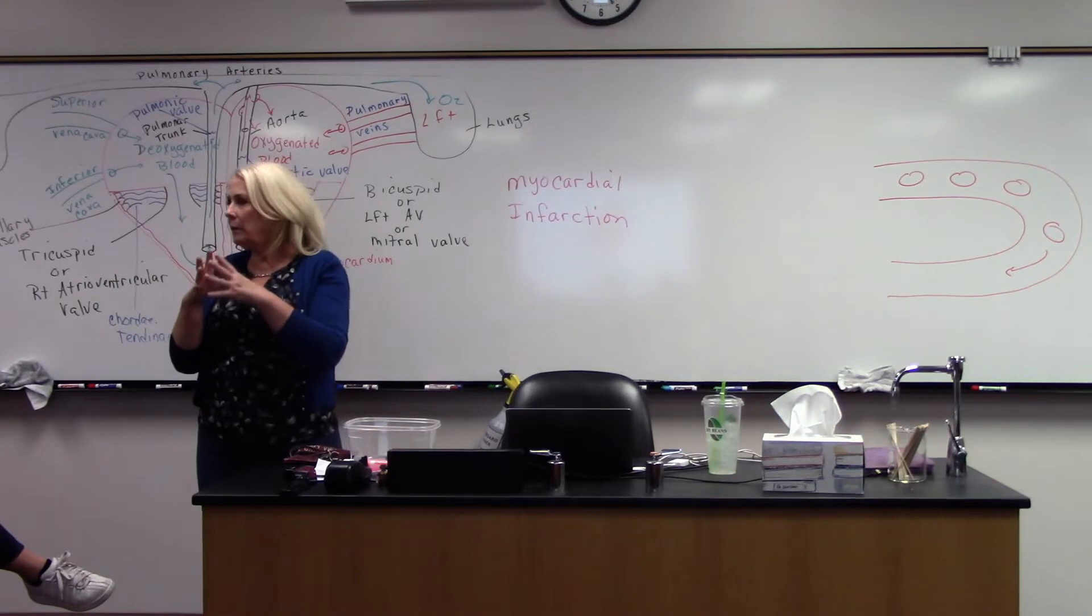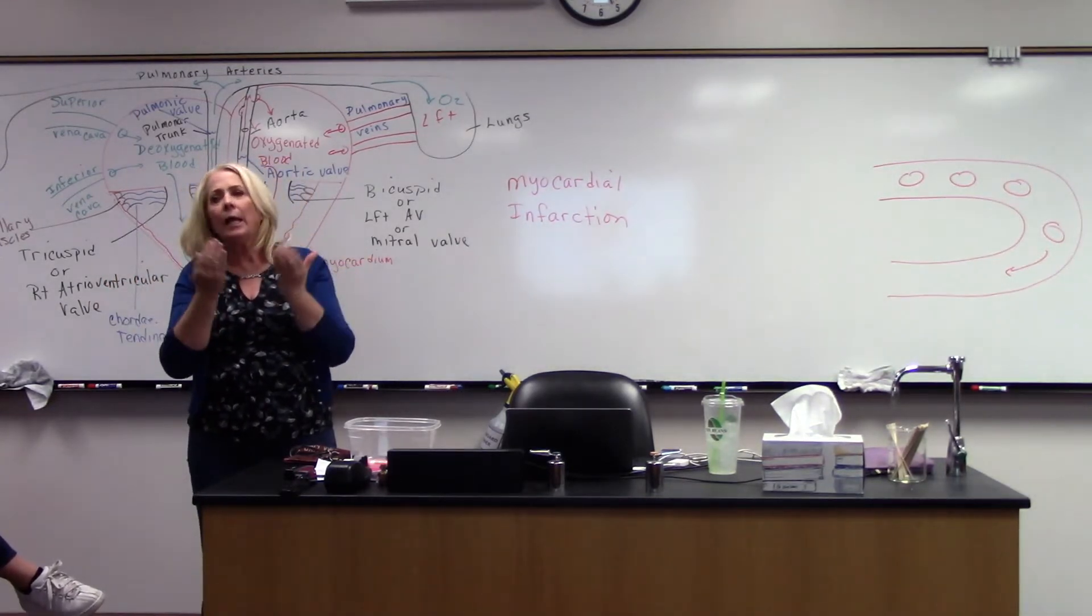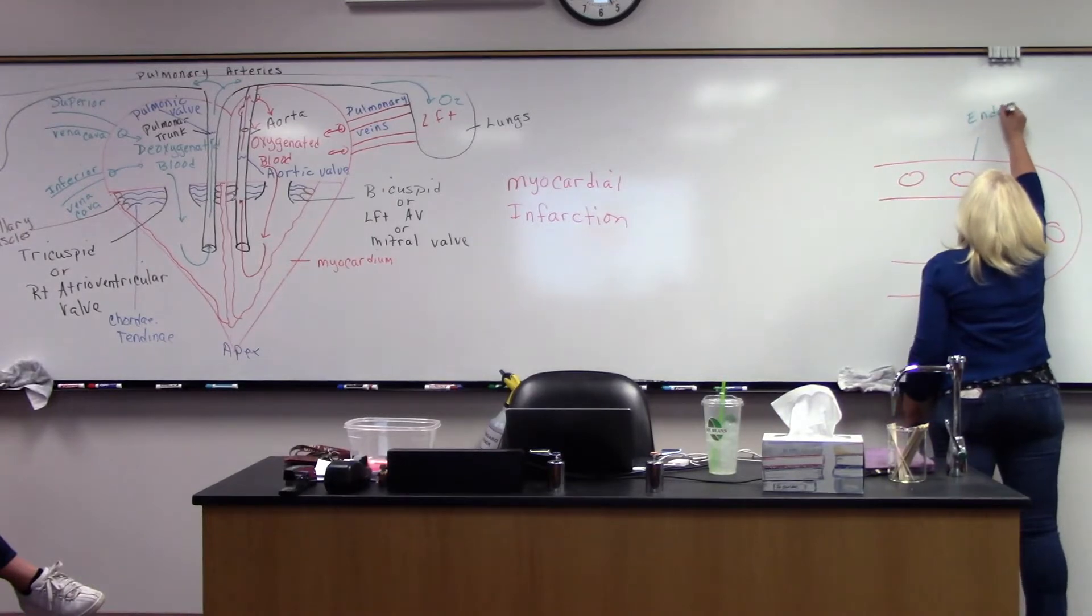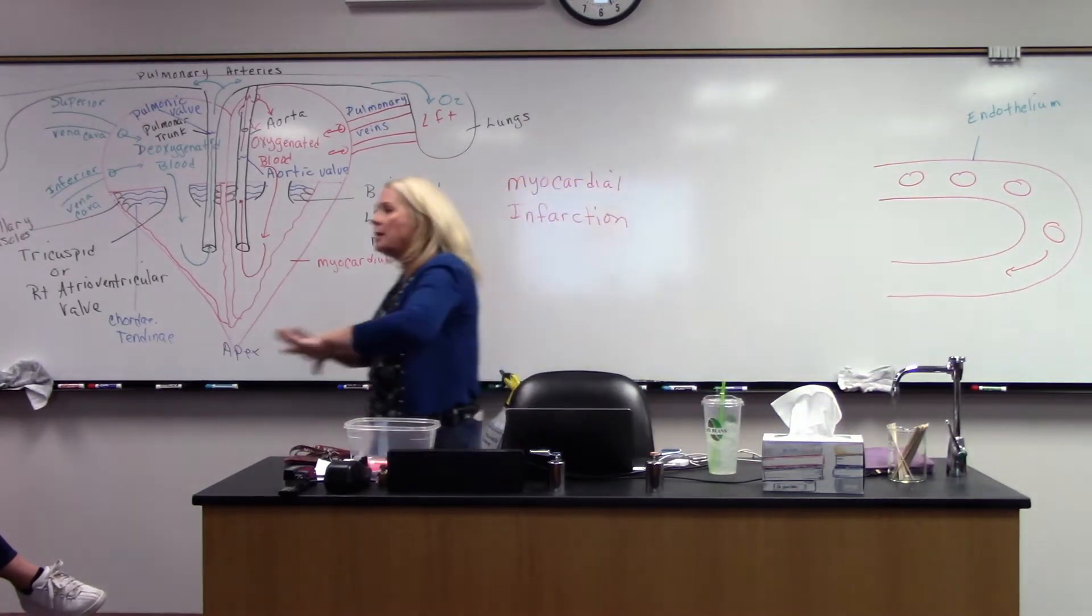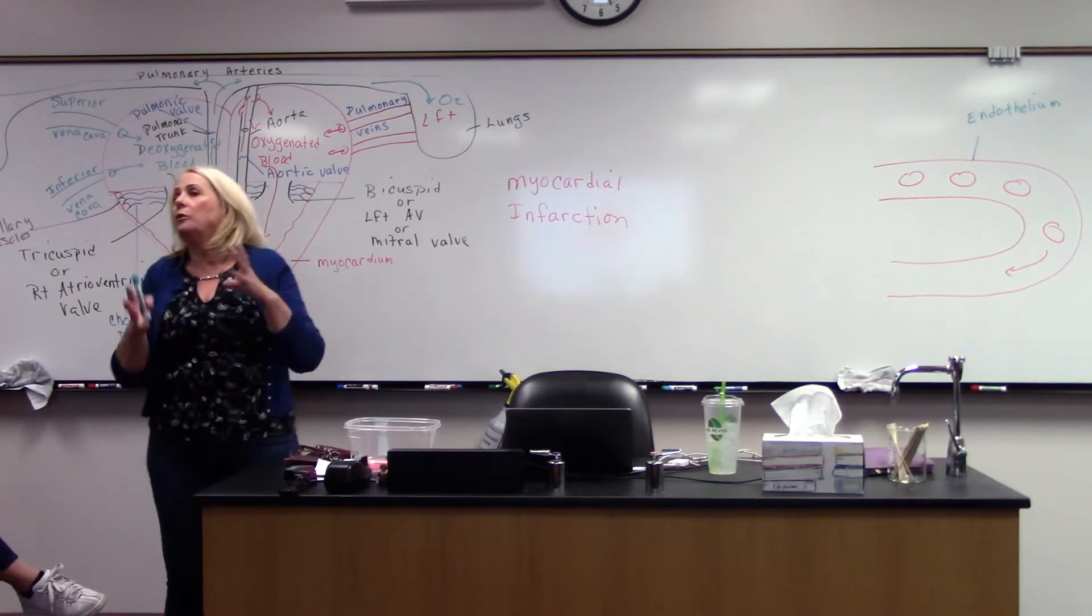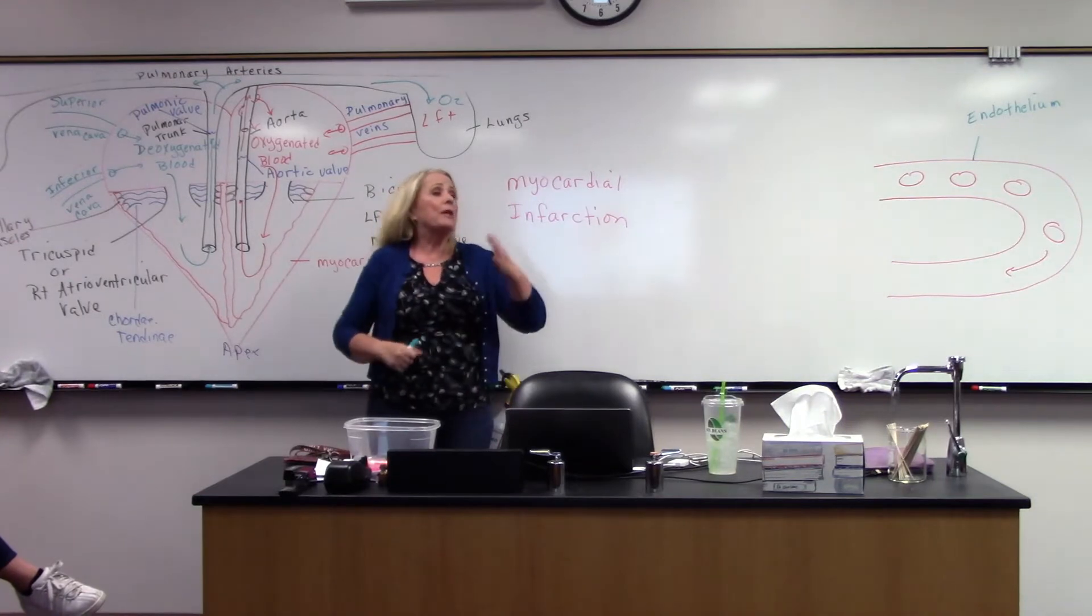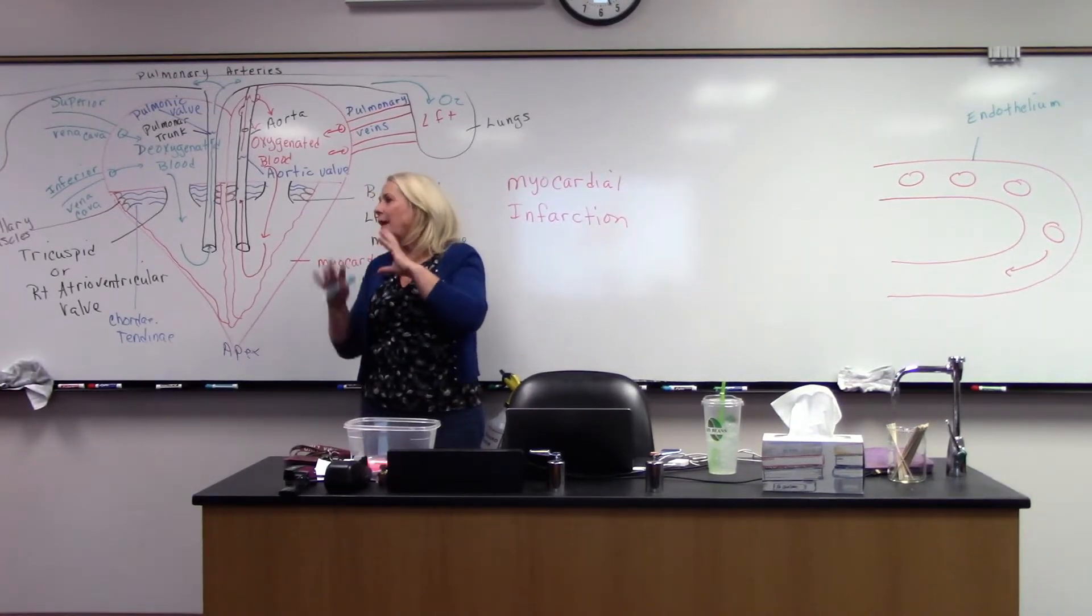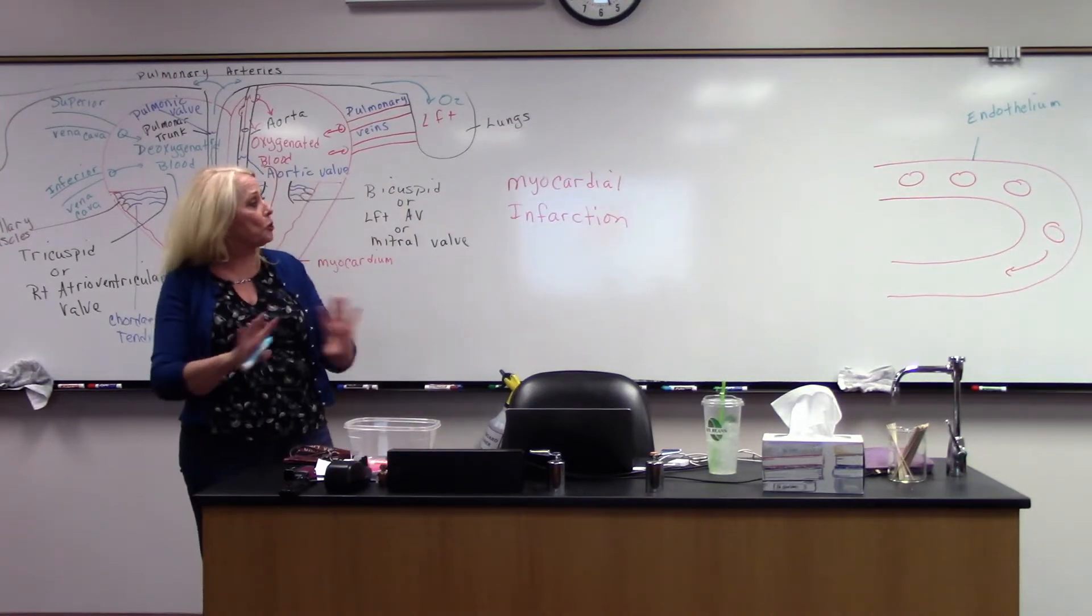When we talk about plaque in the arteries, plaque in the arteries all start from the same thing. There is destruction of the lining of the arteries. Now, that lining is referred to as the endothelium. It's a super smooth lining. It is slick. Nothing sticks to it. As a matter of fact, it's slicker than Teflon. You know that stuff in your frying pans? You buy a Teflon-coated pan so you can cook an egg in it, and the egg just slides right out.